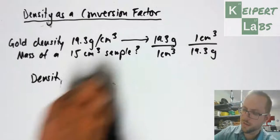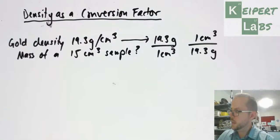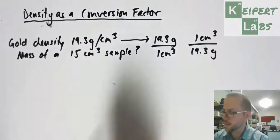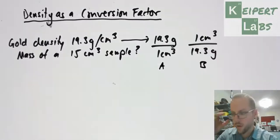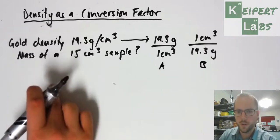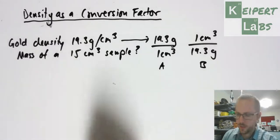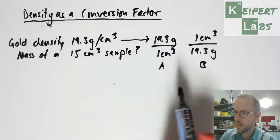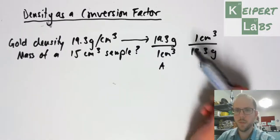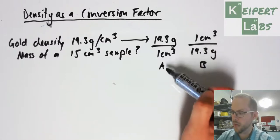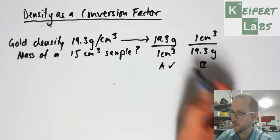We want to use our factor label method to make calculations involving one of these two factors, version A or version B. Remember that the general principle is the units that I want over the units that I have. The units that I want is mass, so I want units of grams to be on top. I'm going to pick version A in this case.